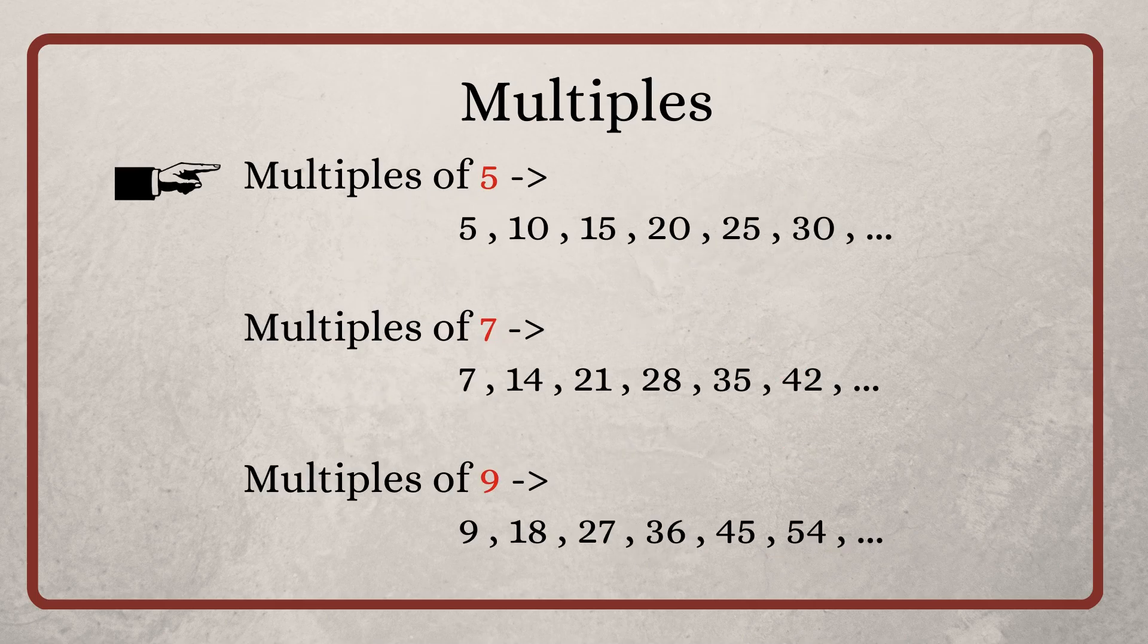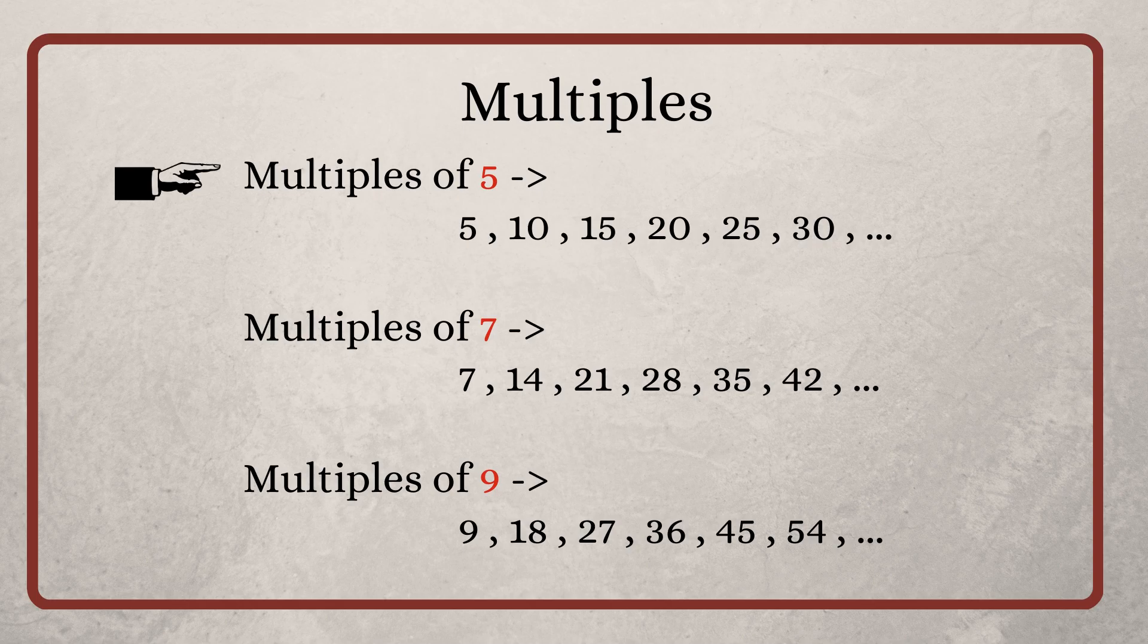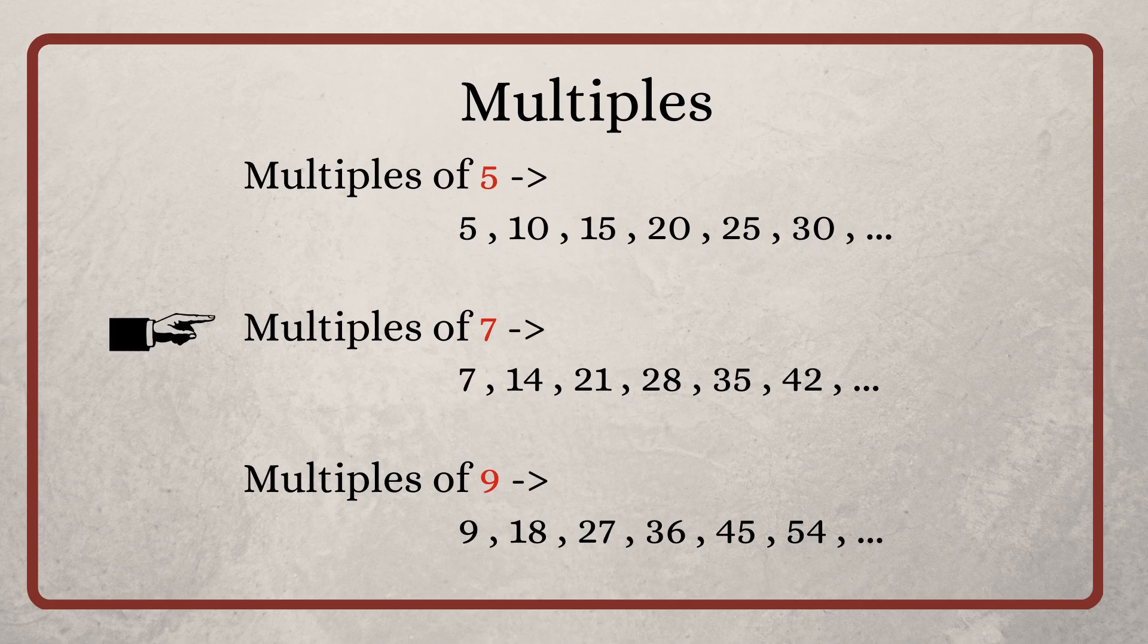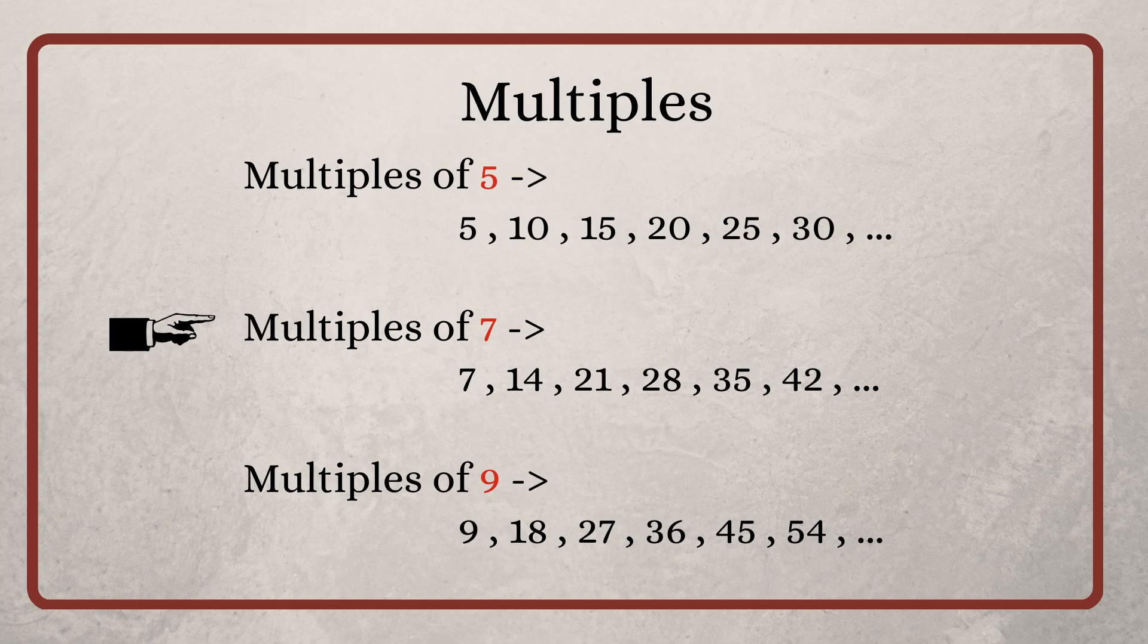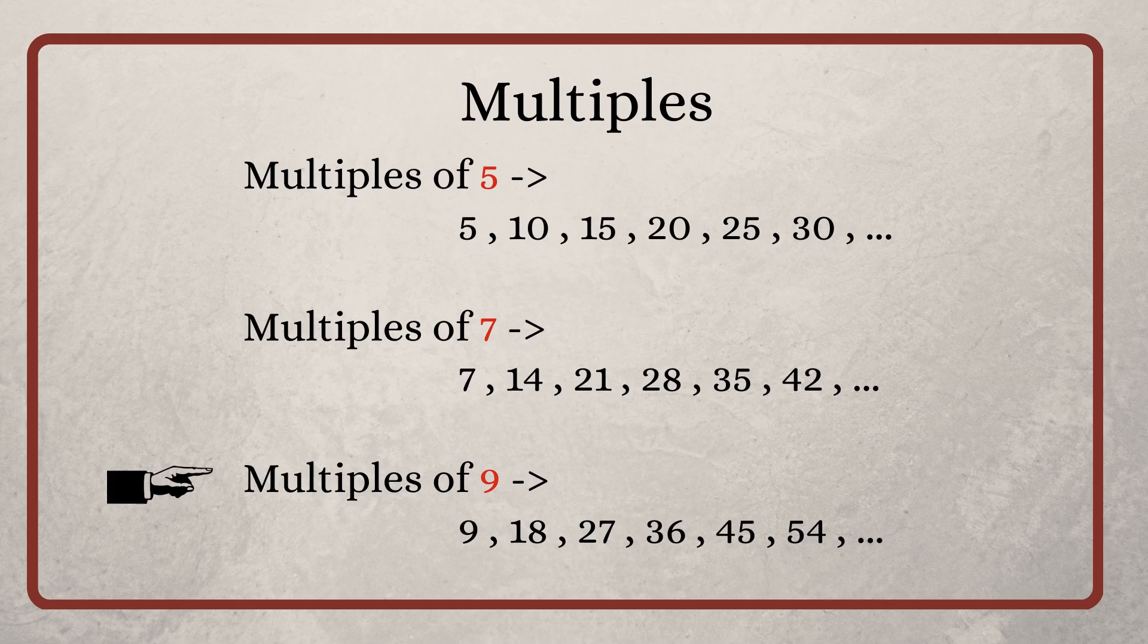Similarly, multiples of 5 are 5, 10, 15, 20 and so on. Multiples of 7 are 7, 14, 21, 28 etc. And multiples of 9 are 9, 18, 27, 36 and so on.